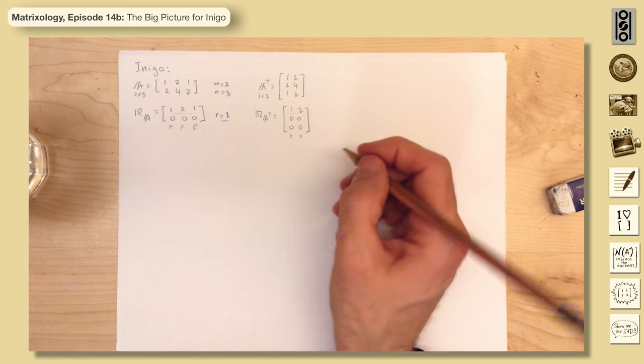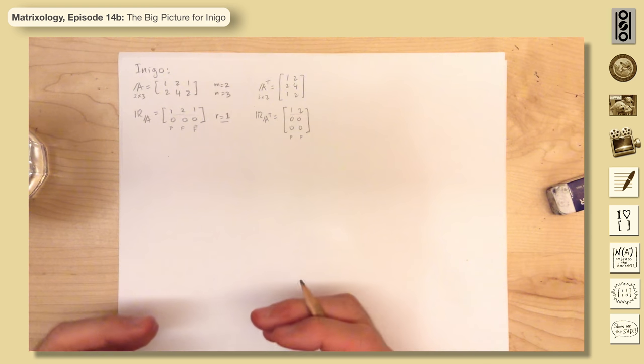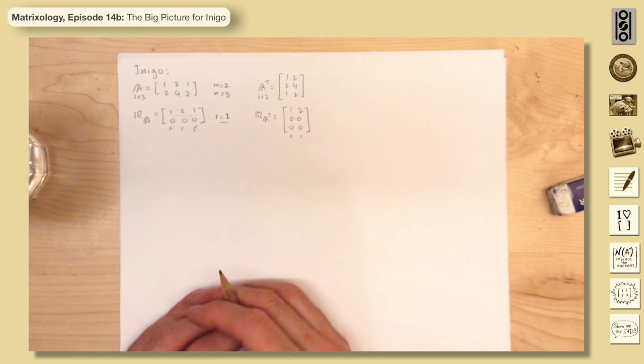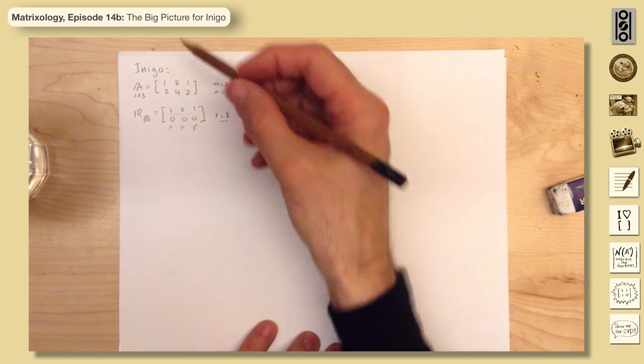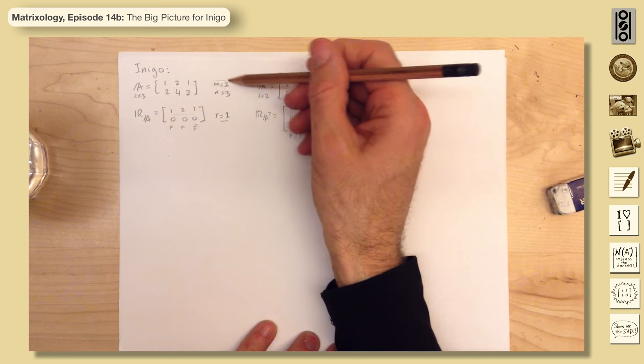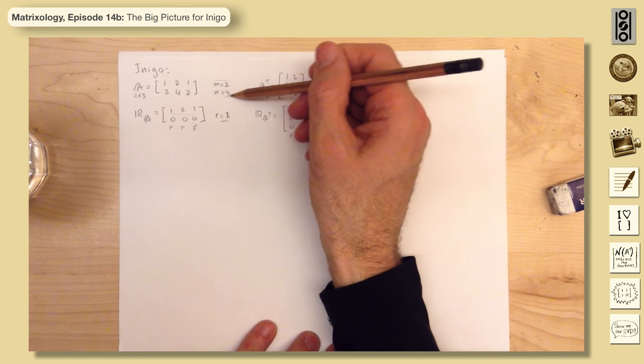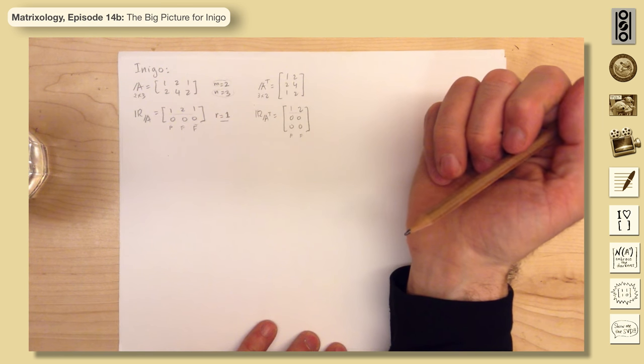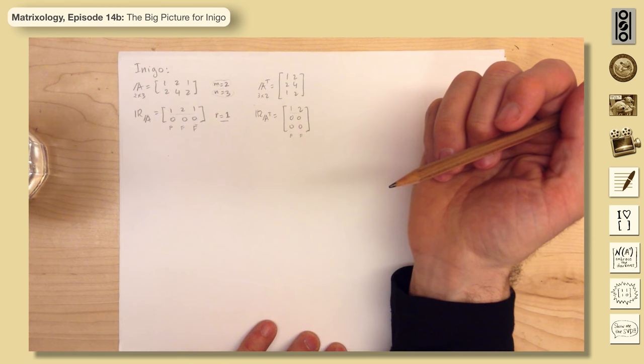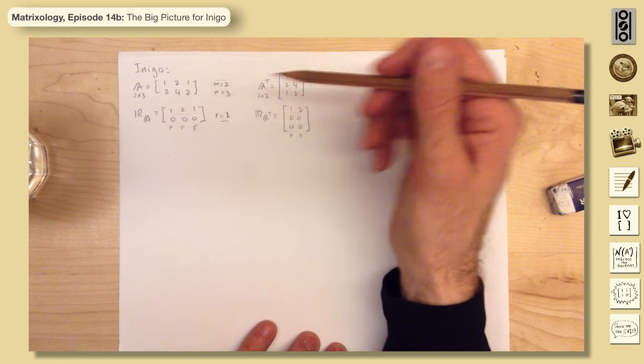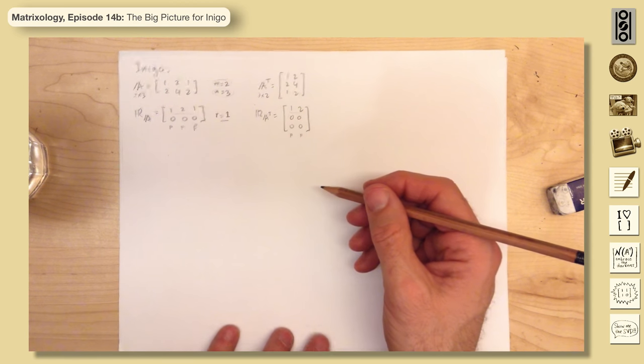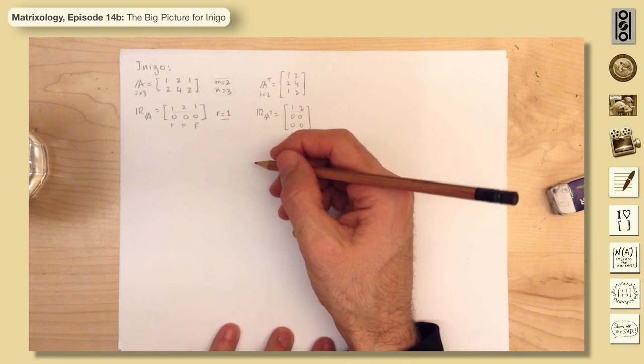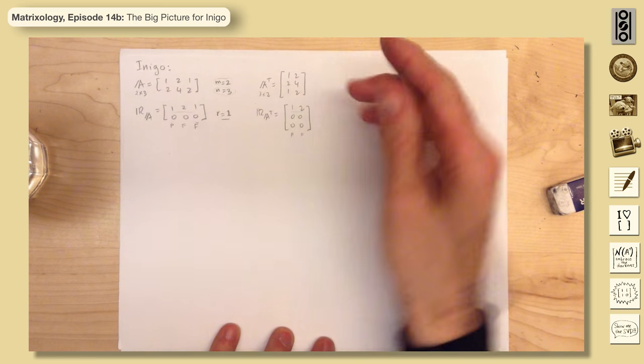So column space and row space, the big pieces, they're one-dimensional. So column space is a one-dimensional space in this case inside of a two-dimensional one, and row space is one-dimensional inside of three dimensions. Now, we can do this in more or less kind of confusing ways.